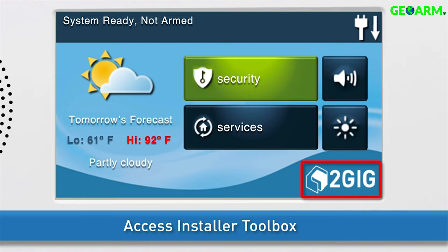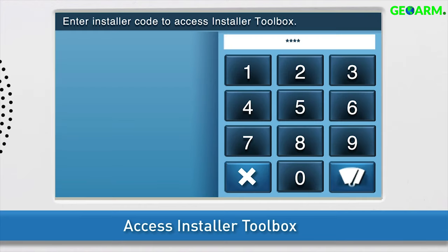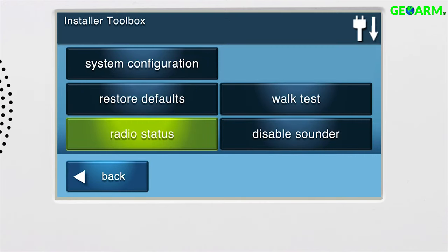Press the 2GIG logo on your GC2 panel screen. Enter the installer code. The default installer code for the GC2 is 1561. You are now in the Installer Toolbox.